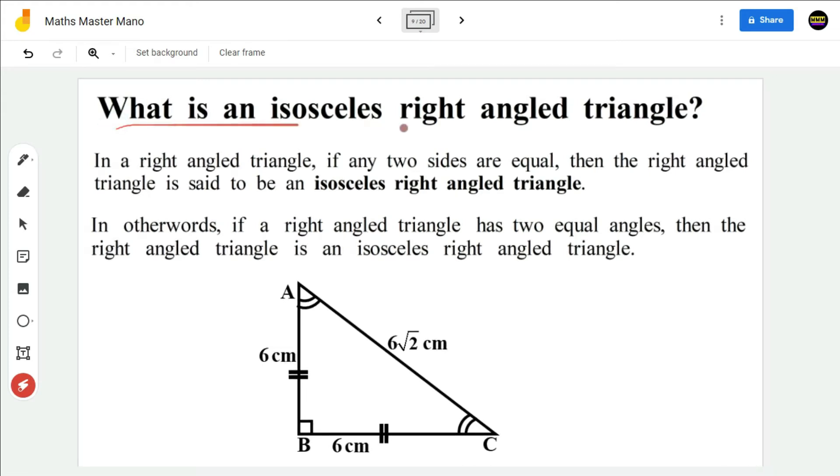What is an isosceles right-angled triangle? In a right-angled triangle, if any two sides are equal, then the right-angled triangle is said to be an isosceles right-angled triangle.